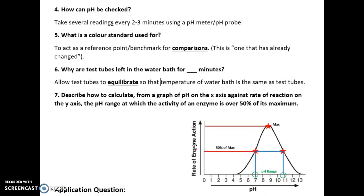If given a graph of rate of enzyme action against pH, you should know what the common bell curve looks like for each factor. To calculate the pH range over which enzyme activity is above 50% of its maximum: find the peak of the bell curve, find 50% of that maximum on the y-axis, read across and down to find the range. For example, the range might be pH 7 to 11. They could change 50% to 25% or 75%, but the process is the same. They may also ask you to explain the shape of the curve using the low-pH proton mechanism affecting ionic interactions and hydrogen bonds in the tertiary structure, therefore changing the active site so it's no longer complementary.